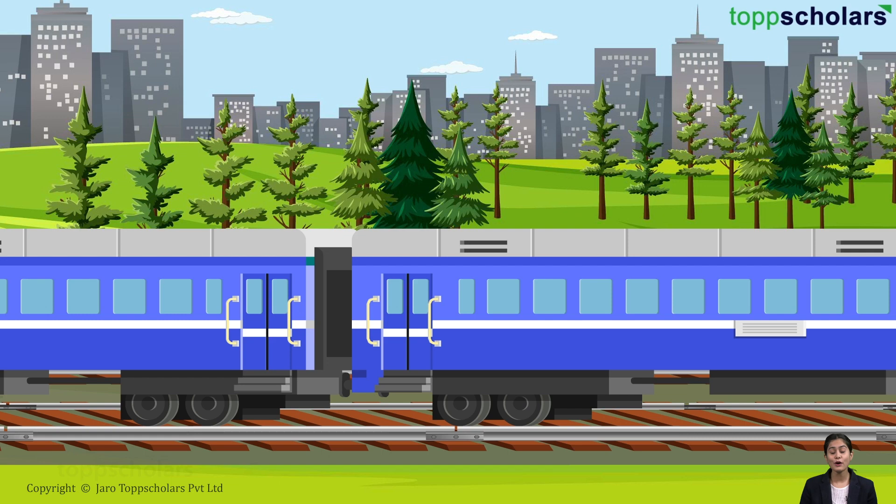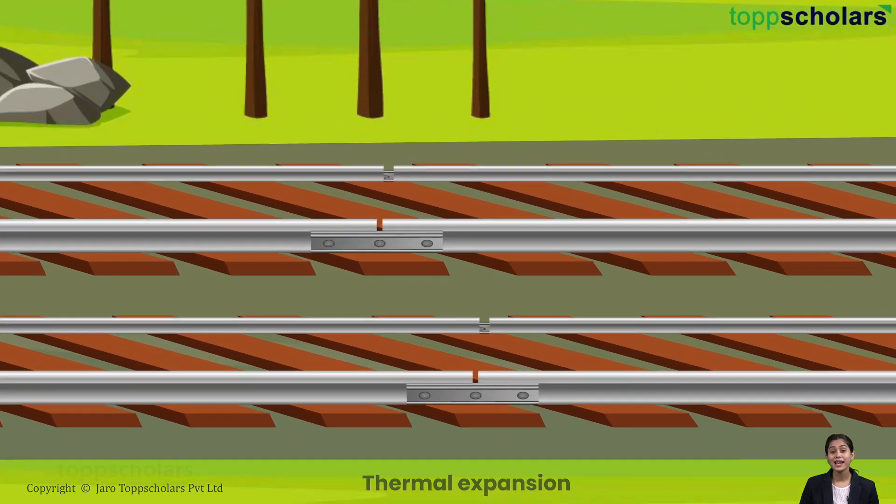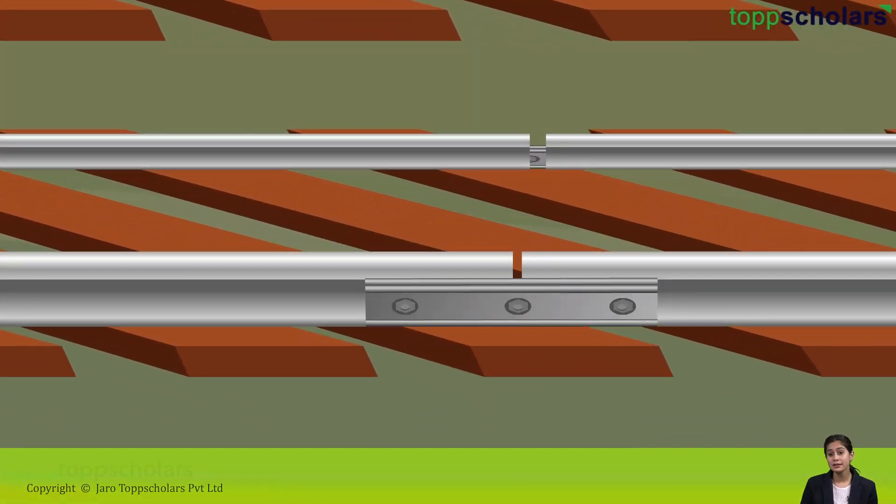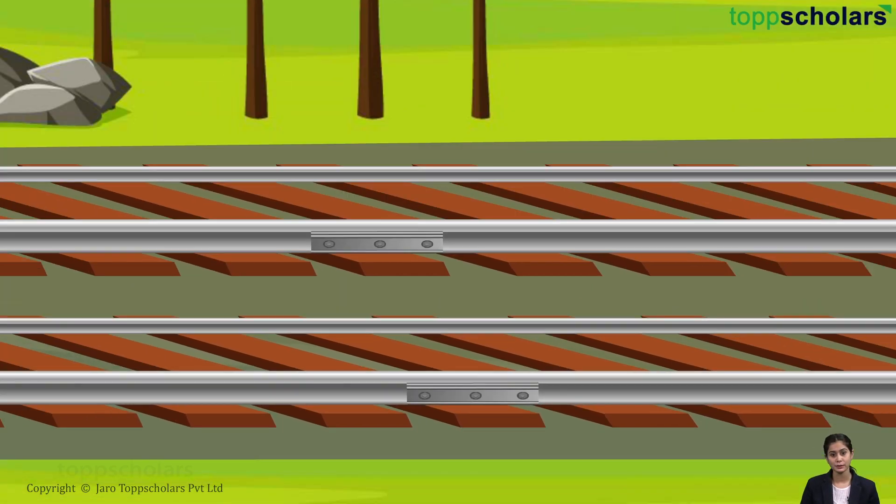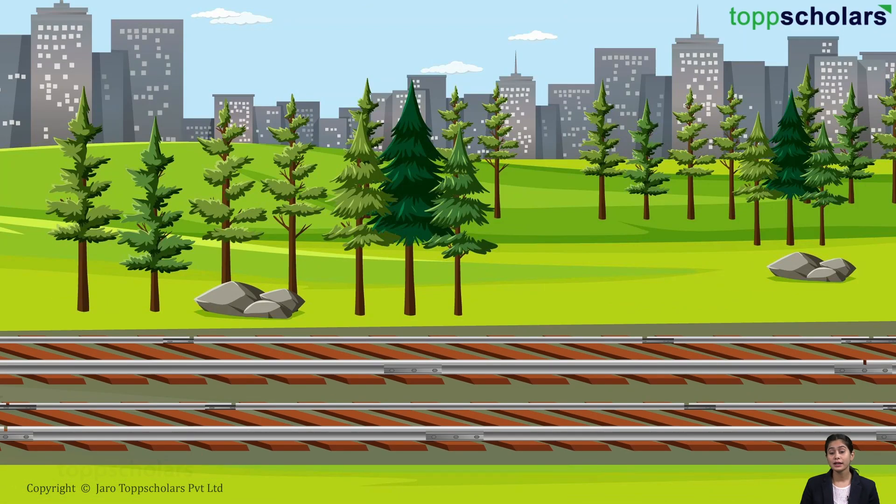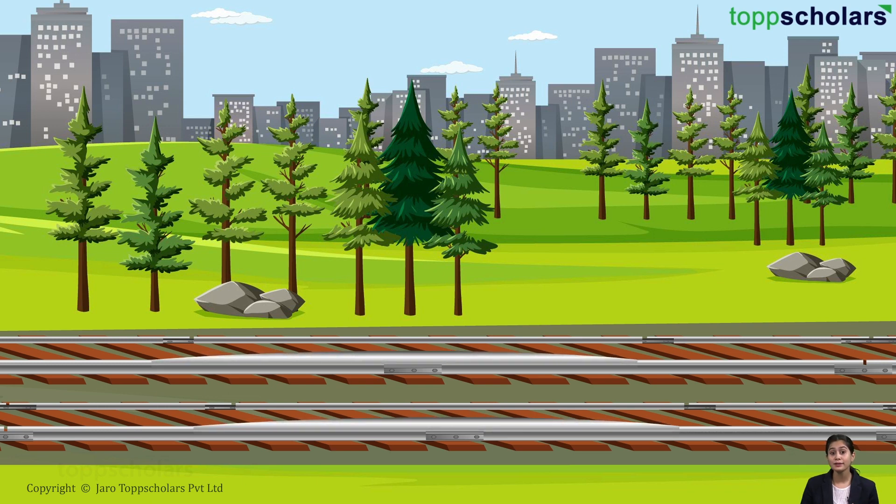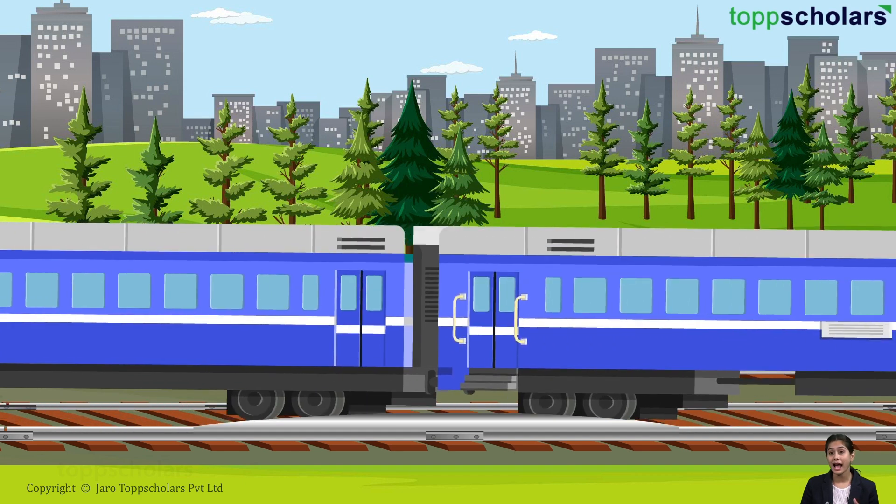Well, this is because of thermal expansion. The iron rails expand in summer and the gap allows space for this expansion. If no gap is left, the expansion in summer will cause the rails to bend sideways. That will result in train accidents.